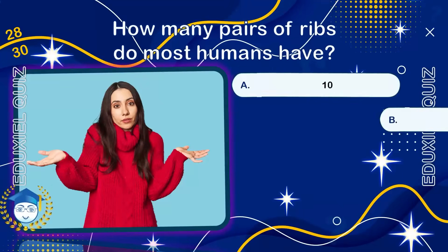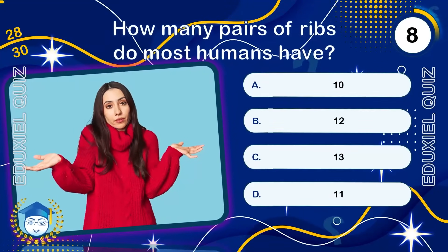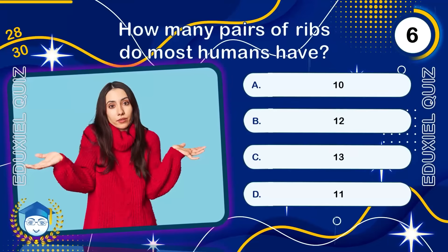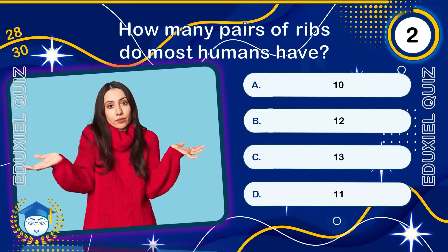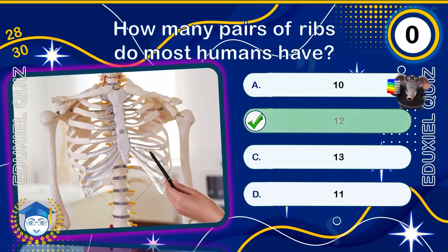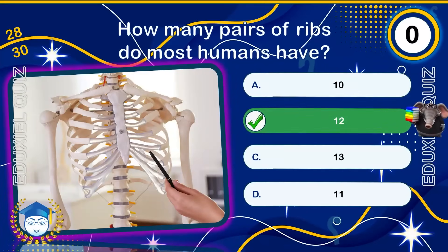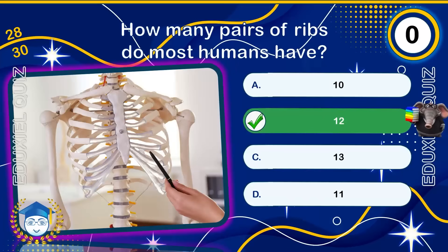How many pairs of ribs do most humans have? Most humans have 12 pairs of ribs, for a total of 24. The upper seven pairs are true ribs attached directly to the sternum, while the lower pairs are false or floating. Variations occur, and some people have an extra cervical rib.